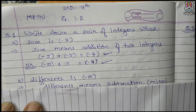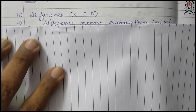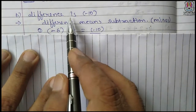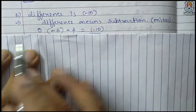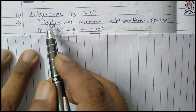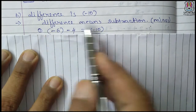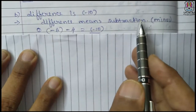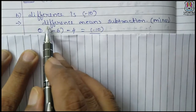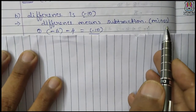Let us go to the next one. Find the difference is minus 10. We have to write two integers such that the difference — meaning subtraction — gives us minus 10.